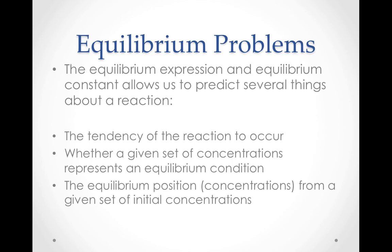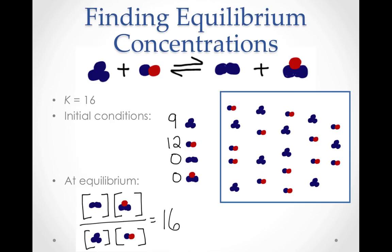Let's look at a model to help us understand how to find equilibrium concentrations. Here is a reaction in which a 3-blue-dot molecule reacts with a red-and-blue-dot molecule to form a 2-blue-dot molecule and a 2-blue-dot-1-red-dot molecule. Let's assume the equilibrium constant is 16, and the initial concentrations are 9 three-blue-dot molecules and 12 red-and-blue-dot molecules. The equilibrium expression shown here will allow us to figure out what the equilibrium position is. Since we're only dealing with 25 particles, we could use trial and error to figure it out.